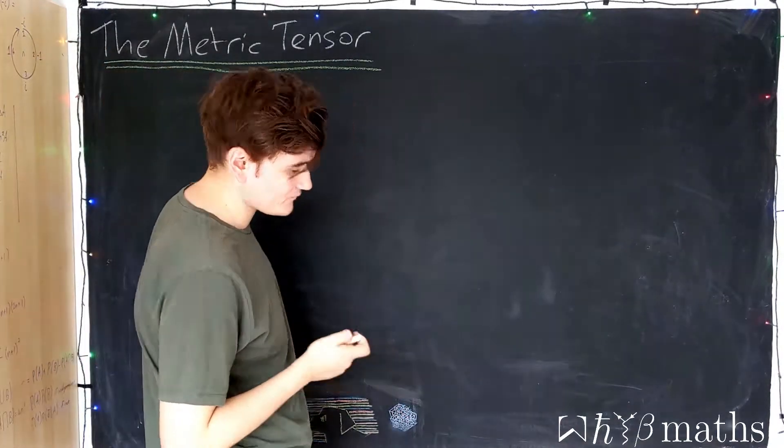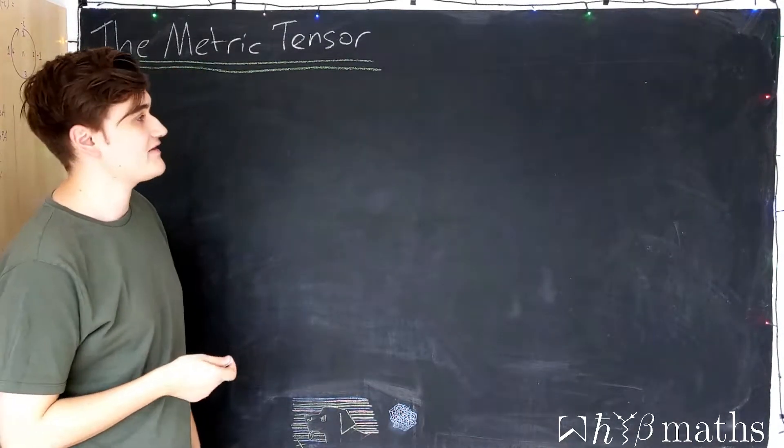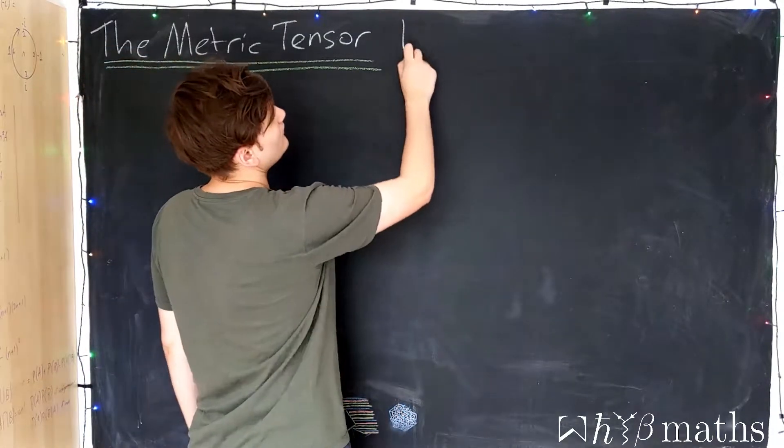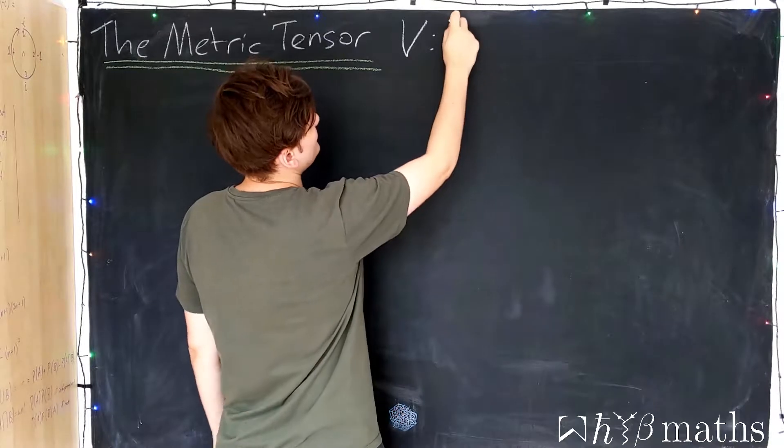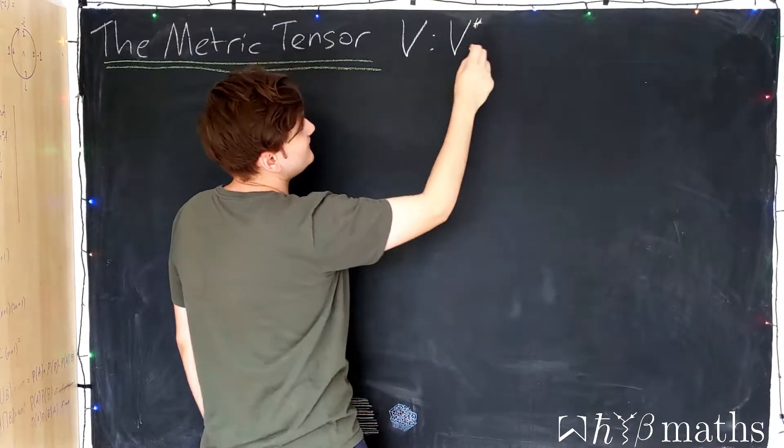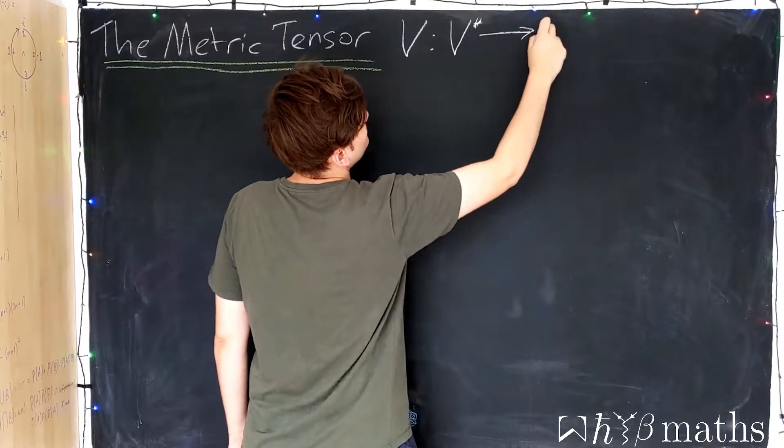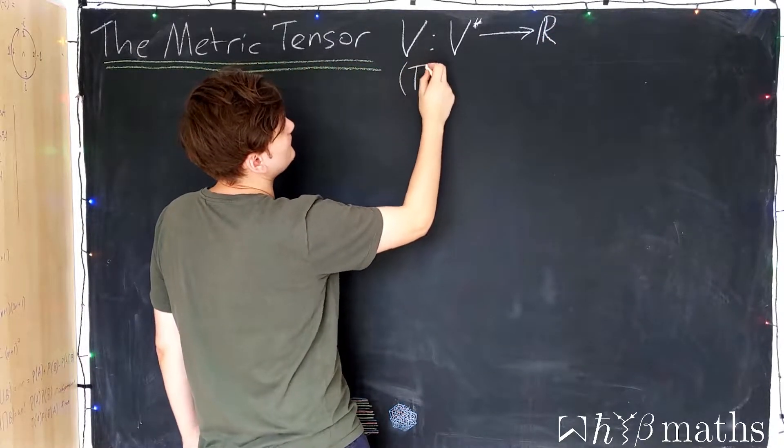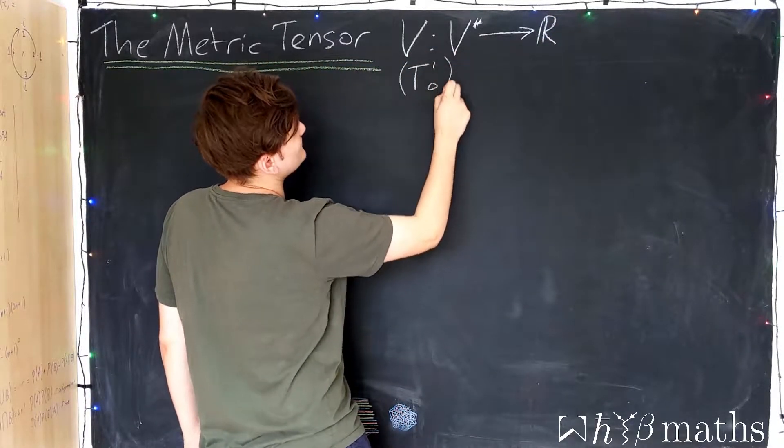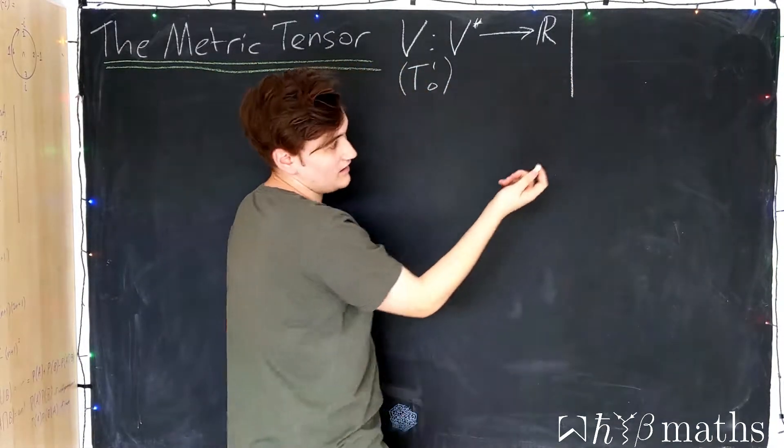So far we've made the distinction between vectors and dual vectors. We understand vectors as being linear maps from the dual space to the real numbers, or as we saw in the last video, T(1,0) tensors.